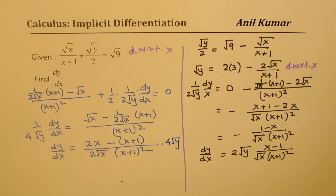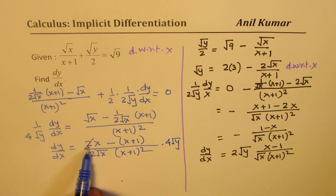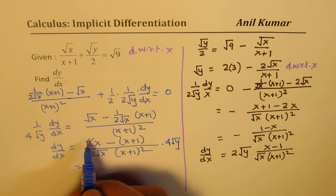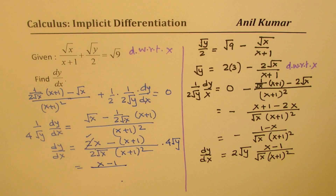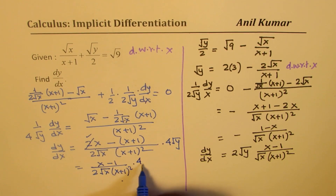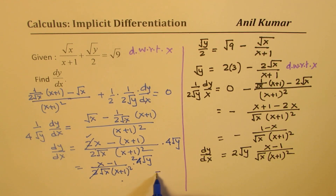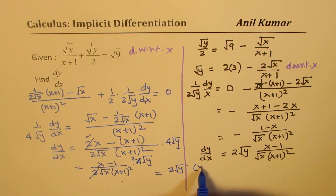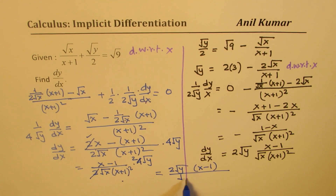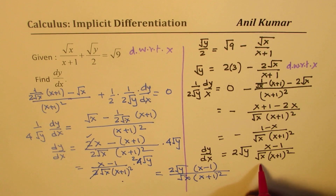Multiplying by 4 square root y and opening the bracket: 2x minus x gives x, so we get (x minus 1) in the numerator, divided by 2 square root x times (x plus 1) squared, times 4 square root y. Cancelling, we get 2 square root y. So we can write this as 2 square root y times (x minus 1) divided by square root x times (x plus 1) squared — exactly the same answer as before.